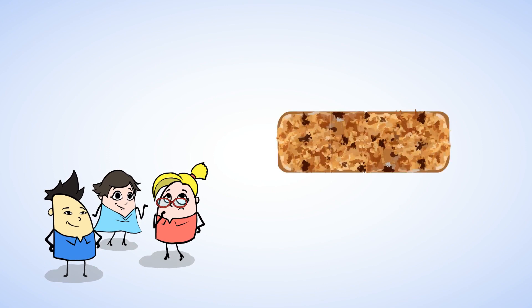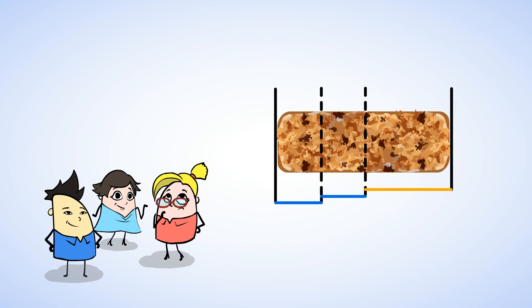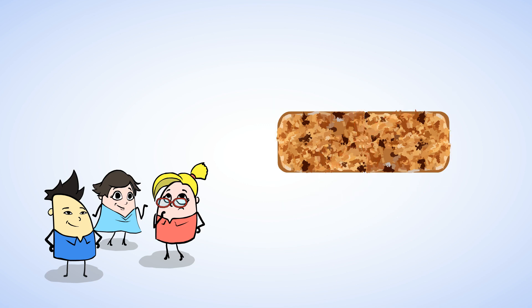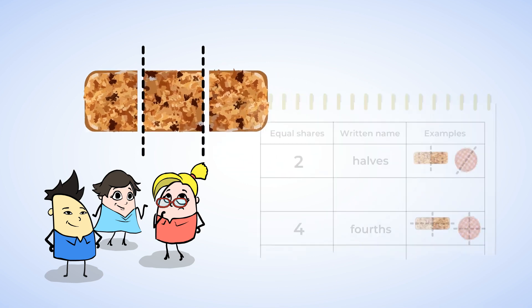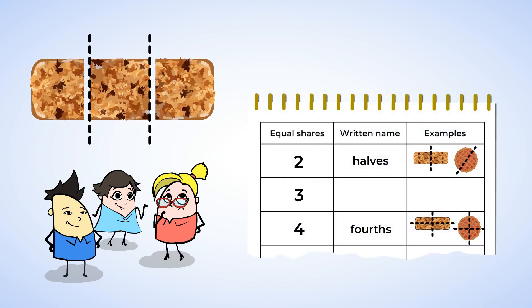Here's another granola bar. How are we going to do this? What if we tried splitting it in half first? That gives us two pieces, but we need one more piece for three, so let's try cutting it here. We have three pieces, but they are definitely not all the same size. So maybe cutting it in half first doesn't work. To share equally among three people, we need to cut the granola bar like this. Now we've made three equal shares, and each friend can get a third. The entire granola bar is cut into three thirds.